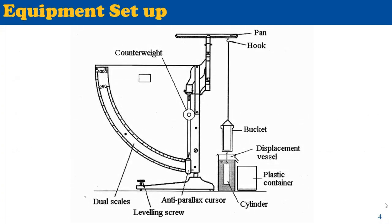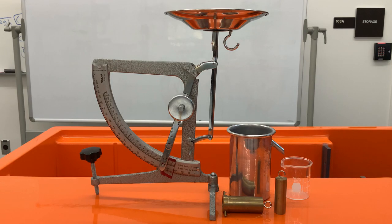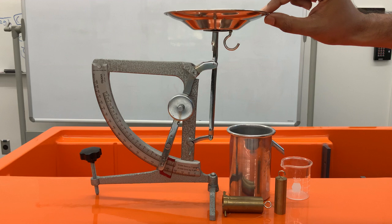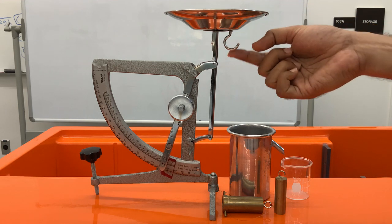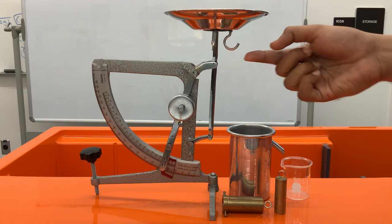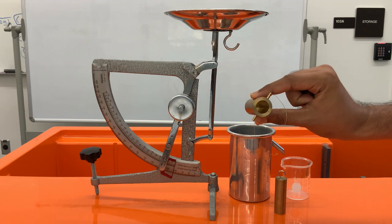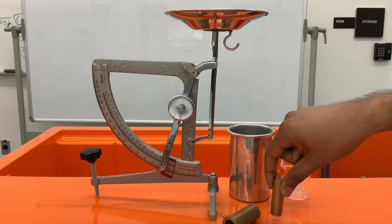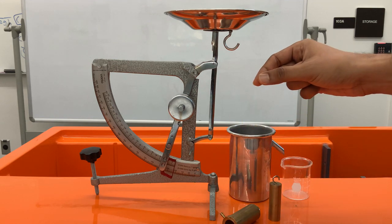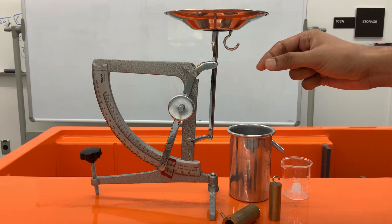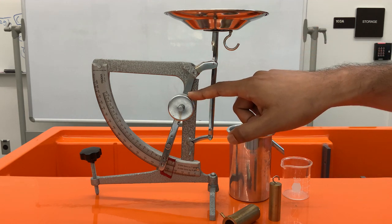So let us introduce ourselves with our equipment. In the Archimedes apparatus we have this pan and underneath the pan we have the hook where we're going to hang the bucket and the cylinder made of brass, and we have the counterweight.